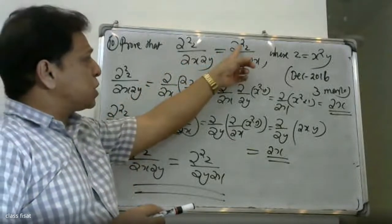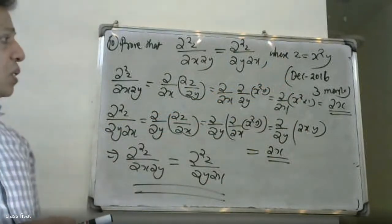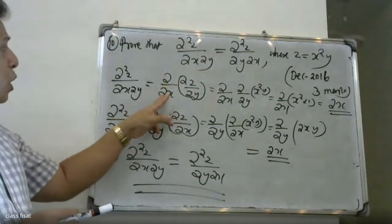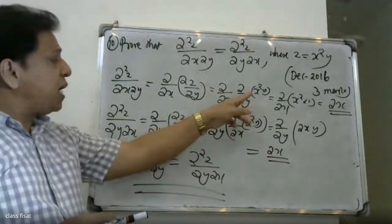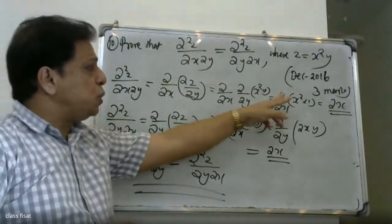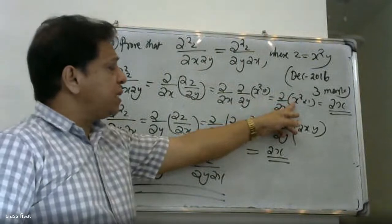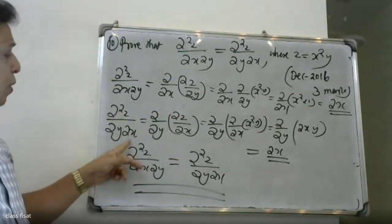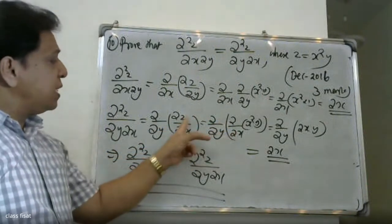So dou square z by dou x into dou y is equal to dou square z by dou y into dou x. The result for both is 2x for z equal to x square y. This completes the proof. In summary: dou by dou y of dou by dou x of x square y gives dou by dou y of 2xy, and differentiating with respect to y gives 2x, confirming the mixed partial derivatives are equal.